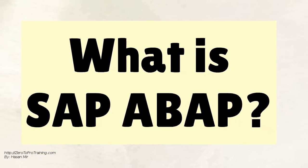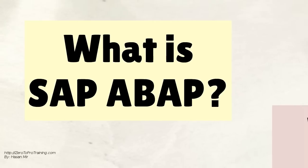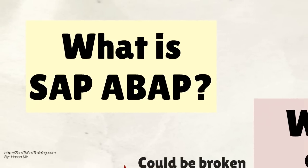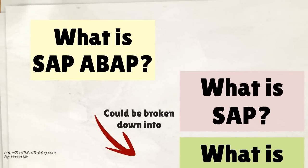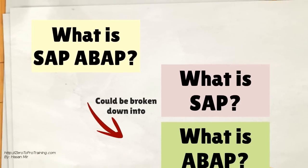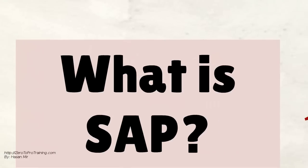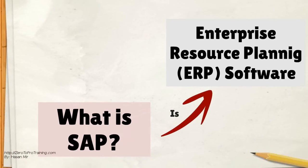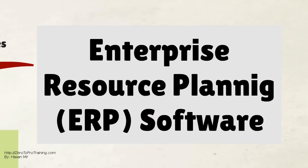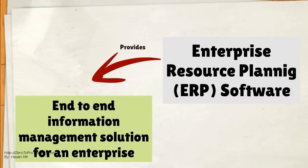What is SAP ABAP? The question could be broken down into two sub-questions: what is SAP and what is ABAP? SAP is an enterprise resource planning software known as ERP. An ERP software provides an end-to-end solution to manage information within an enterprise.